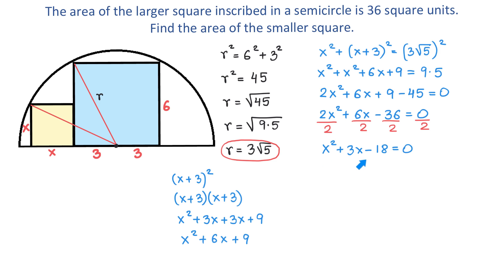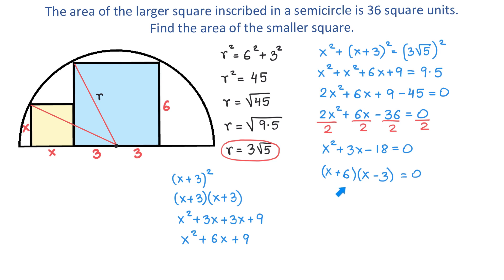We factor the left side. Since we have a trinomial, the factorization is a product of two binomials, each with first term x. We need two numbers whose sum equals 3 and whose product is negative 18. These numbers are 6 and negative 3, because 6 minus 3 is 3 and 6 times negative 3 is negative 18.